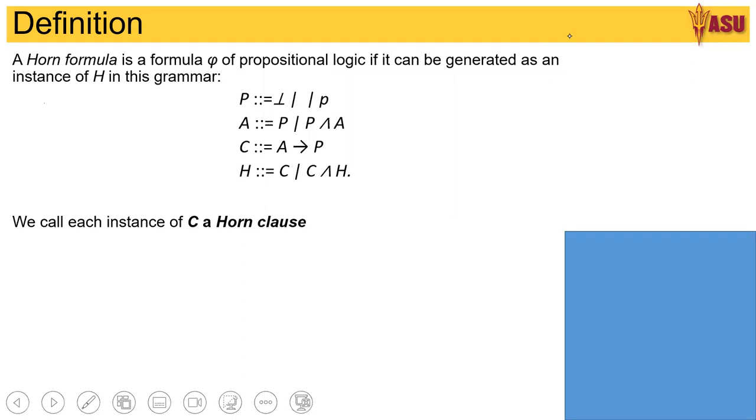The first part is the definition of Horn's formula and Horn's clause. A Horn's formula can be written in this following format. So P is either a bottom or a top, or a literal P. So it can be only true, this represents true, this represents false, and P is a literal.